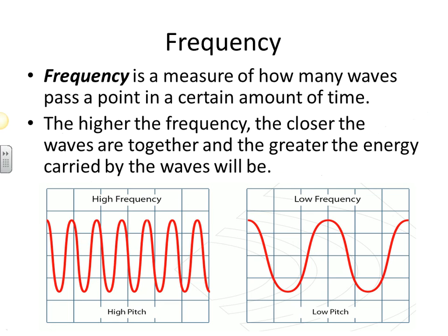So let's start with frequency. Frequency is the number of waves that pass a certain point in a certain amount of time. This is a higher frequency because the number of waves that will pass in the same amount of space and time is more than a lower frequency wave, where less waves are going to pass in the same amount of time and space. So this is a higher frequency because you have like 1, 2, 3, 4, 5, 6 waves passing in this same amount of space as maybe 1 or 2 waves.